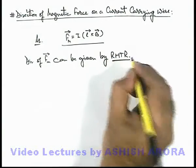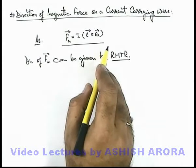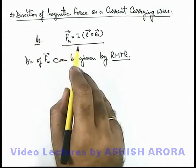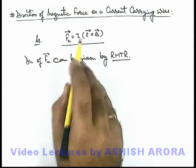By using the concept of cross product, if we rotate our fingers of right hand from L vector to B vector, thumb will give the direction of magnetic force on the current carrying wire.